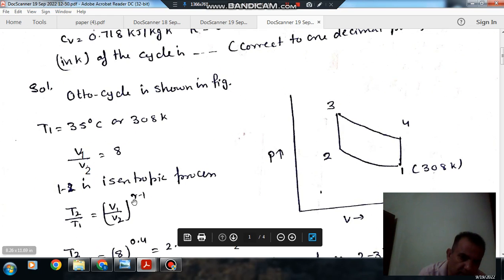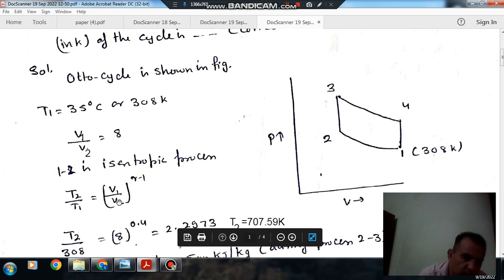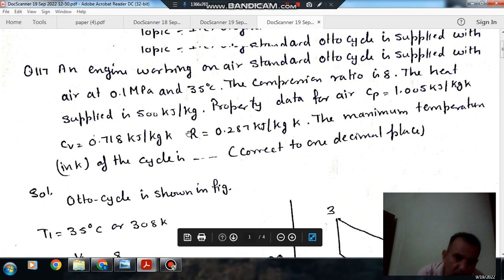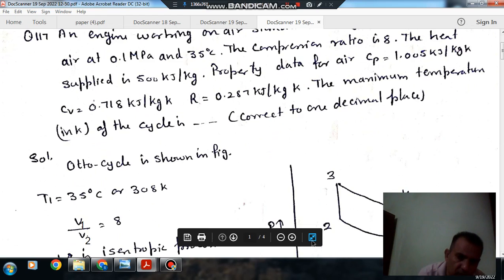And T1 is your 308, so T2 is your 308 into 8 to the power gamma minus 1, so T2 comes out as 707.59 Kelvin. So now heat supplied is also given, so heat supplied is your 500 kilojoule per kilogram and now we have T2 also.